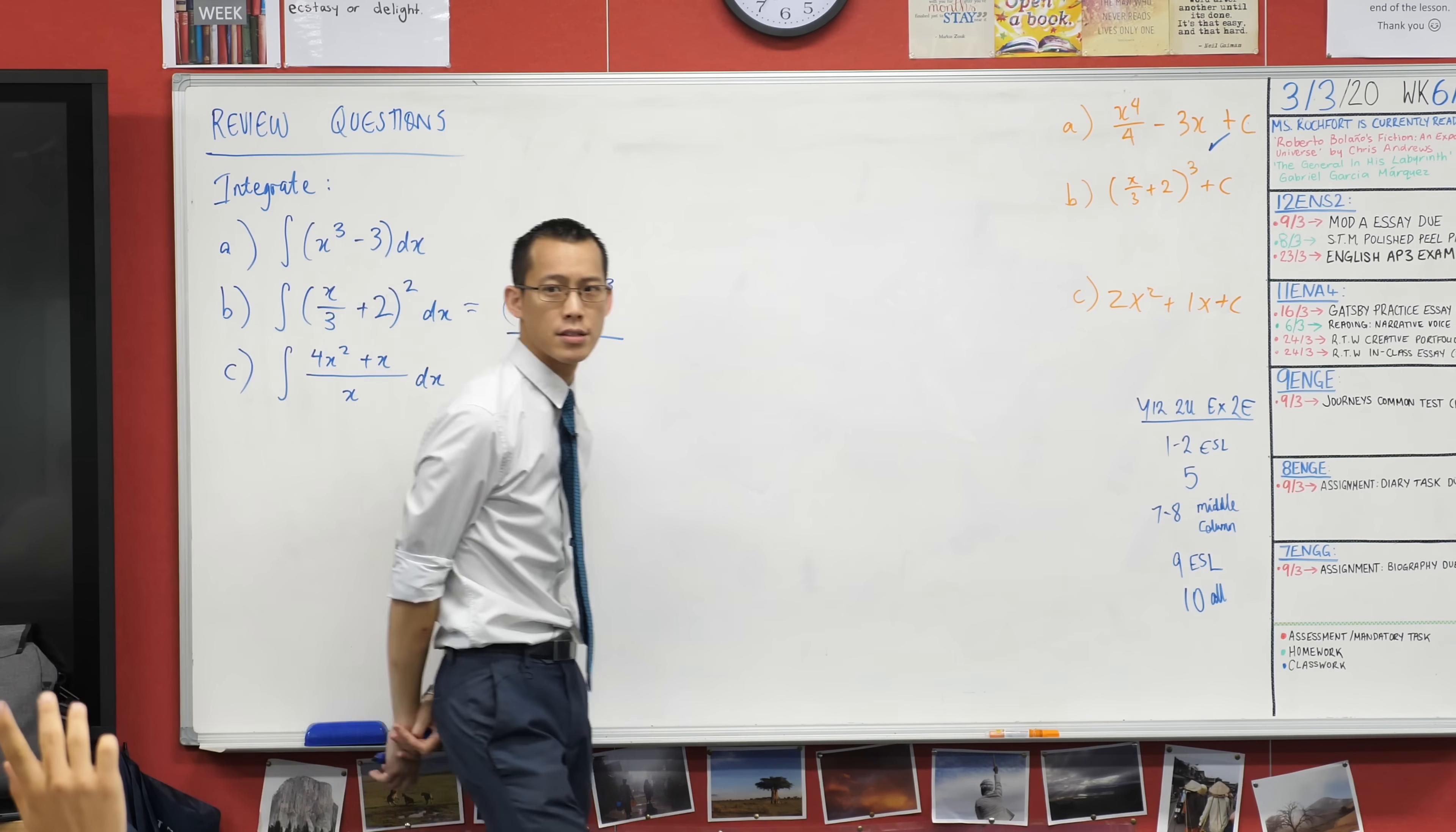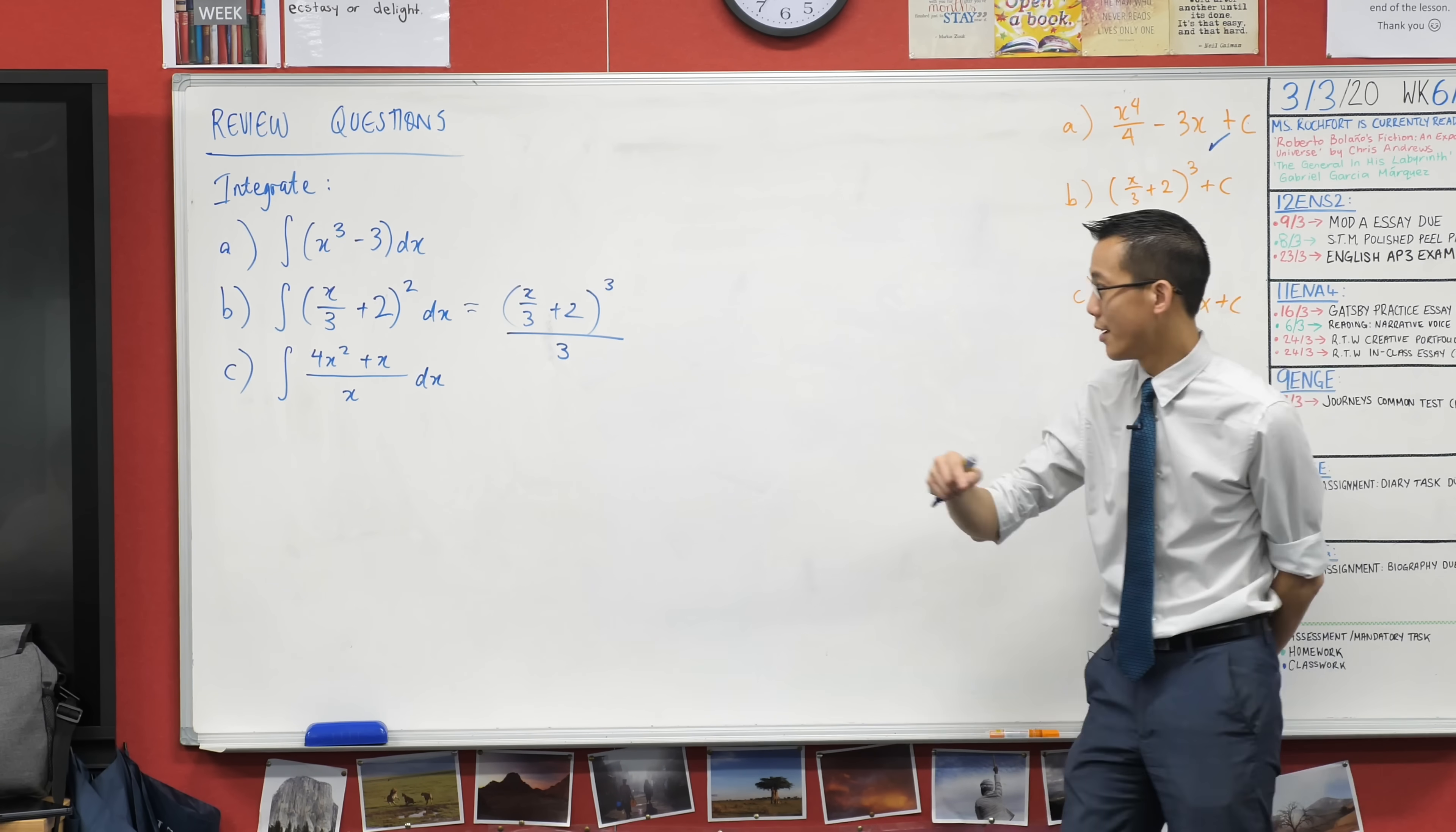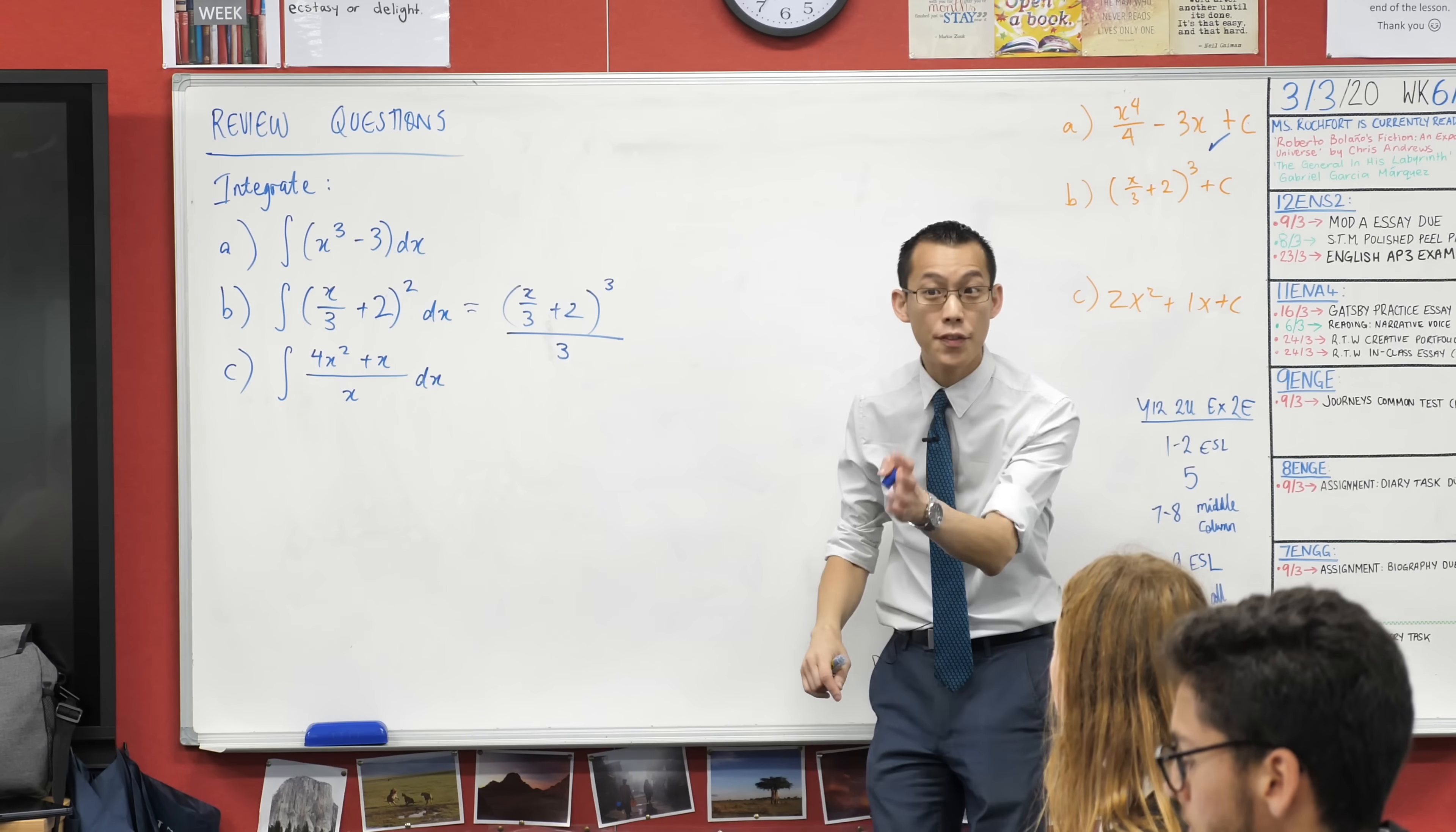What is the inside derivative in this case? It's 1 over 3, right? So this inside derivative, 1 over 3, what do I do with it? I divide by that.